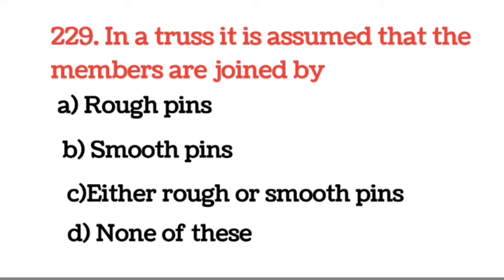Next question: In a truss, it is assumed that the members are joined by a smooth pin. Truss में ऐसा assumed किया जाता है कि members जो हैं वे smooth pin के द्वारा जुड़े होते हैं।